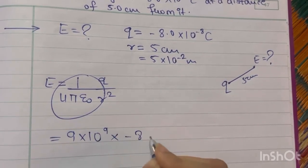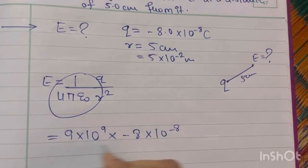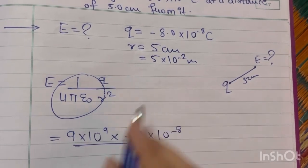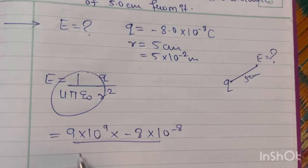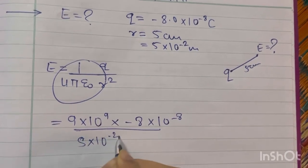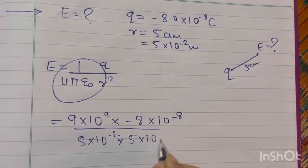Q is minus 8 times 10 raised to minus 8. Radius is 5 times 10 raised to minus 2. Square of radius, so 5 times 10 raised to minus 2, times 5 times 10 raised to minus 2.